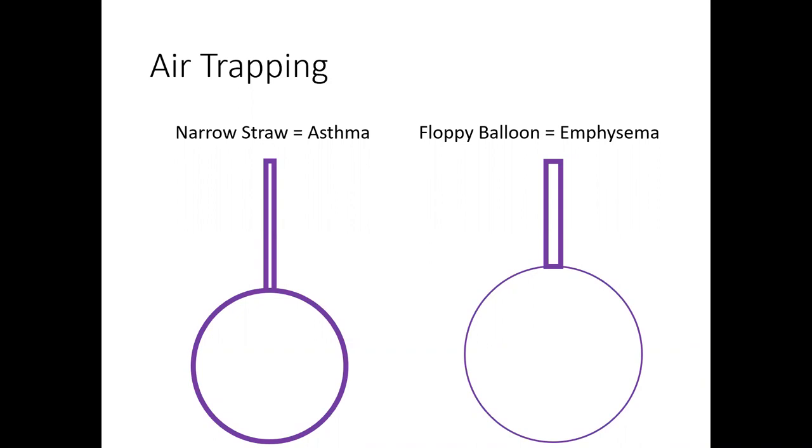The second case where you see dynamic air trapping or auto PEEP is your patient with COPD or emphysema. Think of that patient as having a floppy alveoli or a floppy balloon. That balloon is floppy and has a high compliance. You're going to put the air in during inspiration, and that air again is going to escape the balloon through the straw.